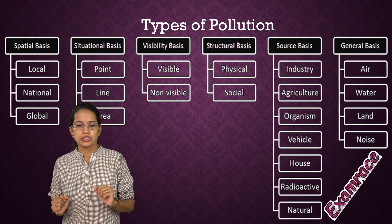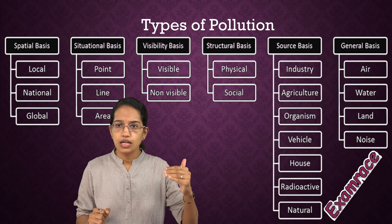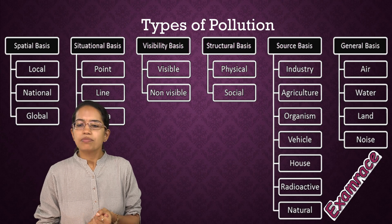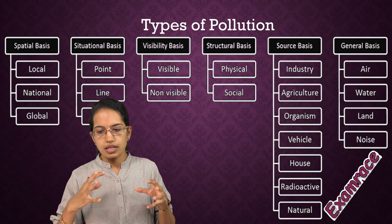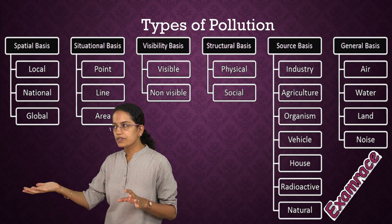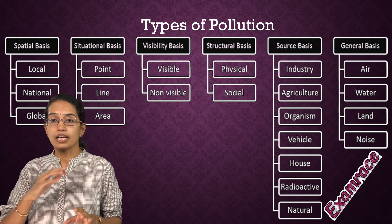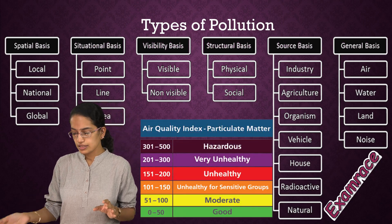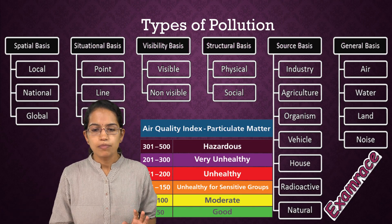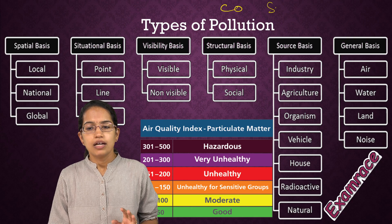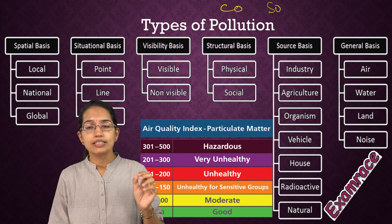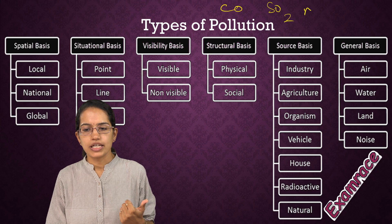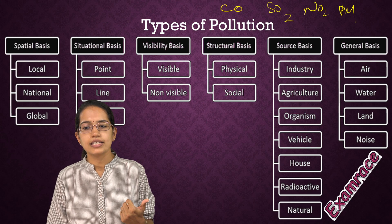Then you have various types of pollution. It could be classified on a spatial basis — local, national, global — or situational, or based on visibility (visible or invisible in nature). Air quality index is important: you have five major components under AQI — carbon monoxide, sulfur dioxide, nitrogen dioxide, particulate matter, and ground-level ozone. Note that carbon dioxide is not considered a major parameter under the AQI.